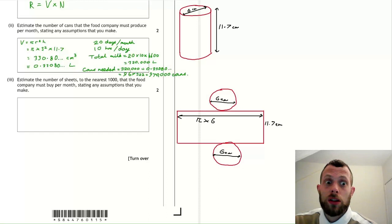Now onto part three, and I'll be honest here, I really don't actually like this question. Estimate the number of sheets to the nearest 1000 the food company must buy per month. These were the one square meter metal sheets that they're using to manufacture the cans.